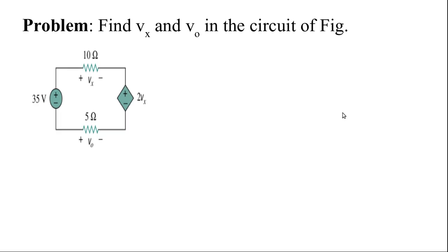Now we have to clear this problem. This element goes from negative to positive, so it is a rise. 35 V is positive. If you look at this source going from plus to minus, that is a potential drop. Now we have to be clear on this concept.